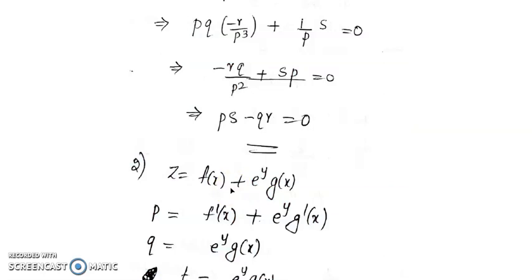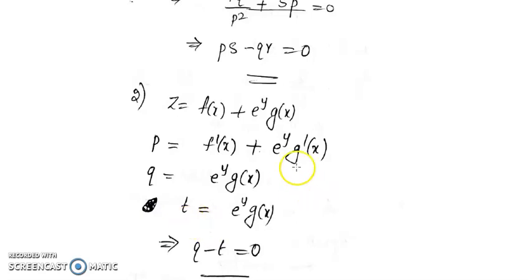The next example is z = f(x) + e^y·g(x). Differentiating with respect to x gives p = f'(x) + e^y·g'(x). Differentiating with respect to y gives q = e^y·g(x). Differentiating again with respect to y gives the same term e^y·g(x), which equals q. Therefore q = t, so the required PDE is q = t.